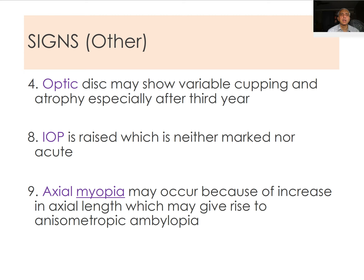The optic disc may show variable cupping and atrophy, especially after the third year. Interestingly, in children, when intraocular pressure is controlled, there can sometimes be some reversal of nerve fiber loss. The IOP is raised but is neither markedly nor acutely elevated. Axial myopia may occur due to increased axial length, which may give rise to anisometropic amblyopia if one eye is affected and the other is not.